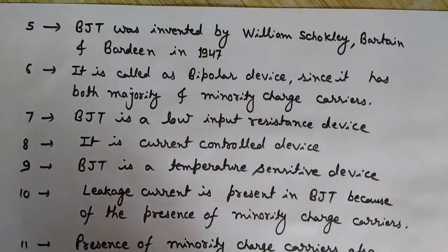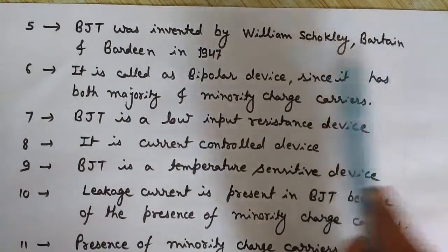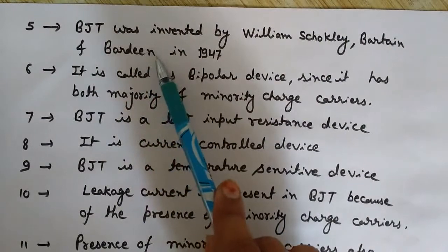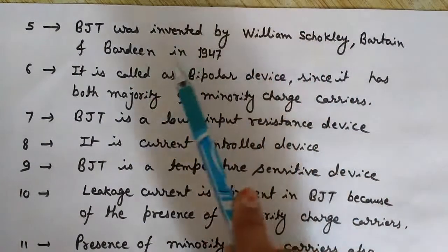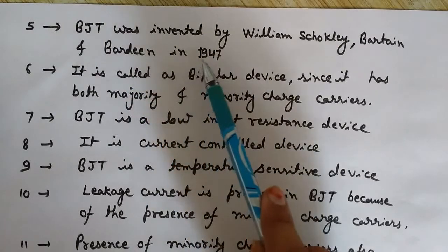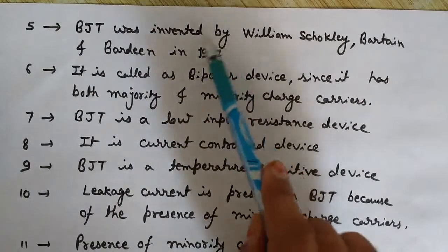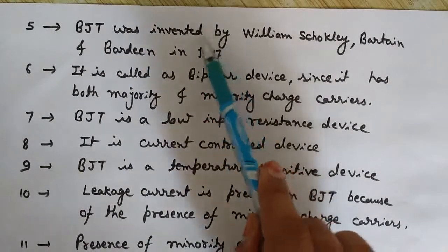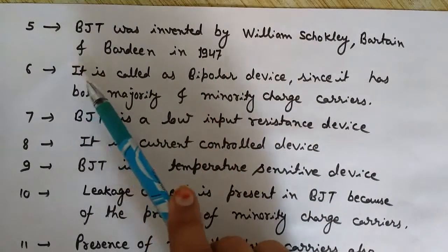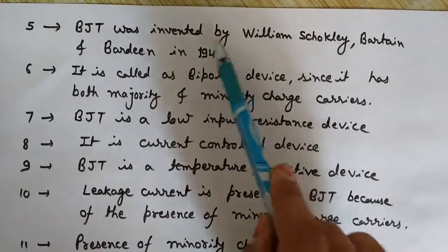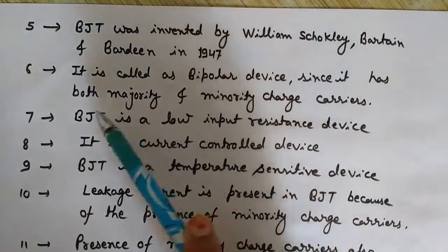BJT was invented by William Shockley, Bardeen, and Brattain. These were the three inventors of the Bipolar Junction Transistor, and it was invented in 1947 — the same year as India's Independence Day on 15th August 1947.